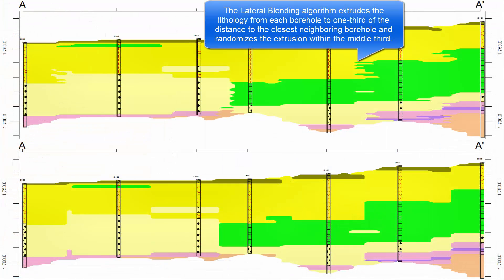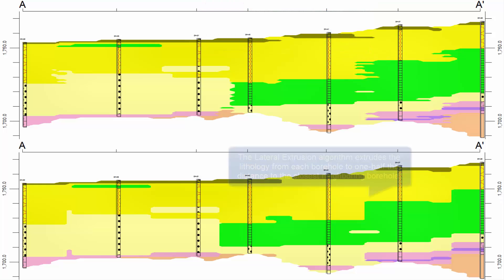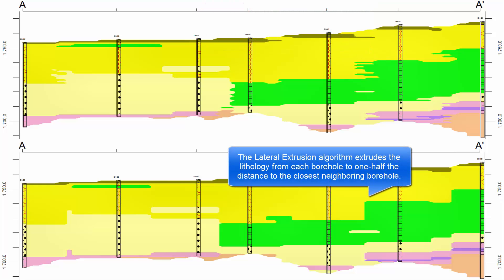The Lateral Blending Algorithm extrudes the lithology from each borehole to one-third of the distance to the closest neighboring borehole, and randomizes the extrusion within the middle third. The Lateral Extrusion algorithm extrudes the lithology from each borehole to one-half of the distance to the closest neighboring borehole.